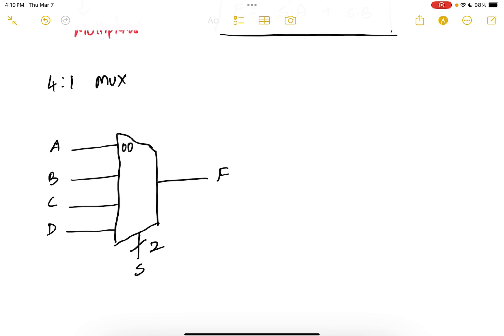And this is port 0, 0. So when S is 0, 0, F is equals to A. When S is 0, 1, F is equals to B. When S is 1, 0, F is equals to C. And when S is 1, 1, F is equals to D.